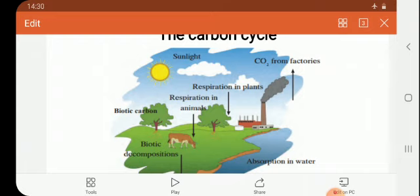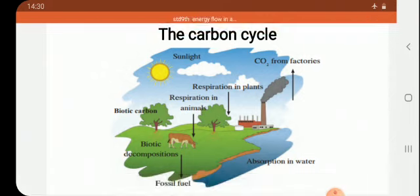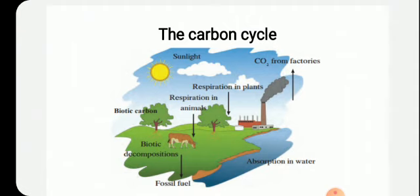This is a cyclic process — transfer of carbon from living organisms to the non-living. This cycle continues and is called the carbon cycle. Carbon cycle is very effective in maintaining the temperature. Carbon dioxide maintains the temperature of the atmosphere.